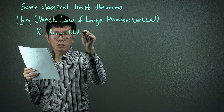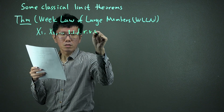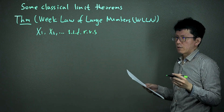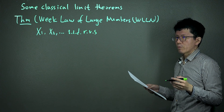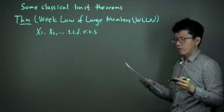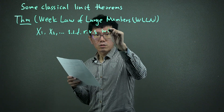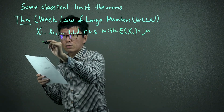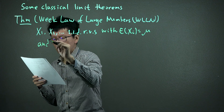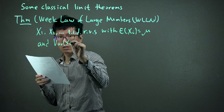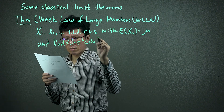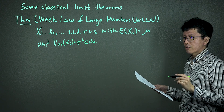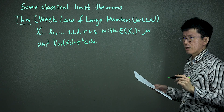We have X1, X2, ..., Xn, and so on, and they are IID random variables — not sequences, but IID random variables. The expectation of Xi is equal to mu, the variance of Xi is sigma squared, and the variance of Xi is finite.